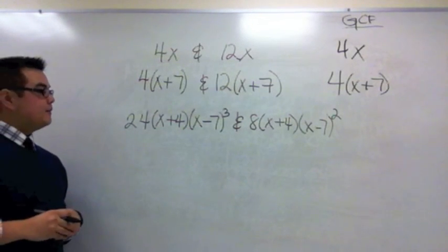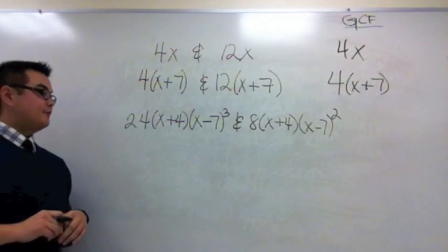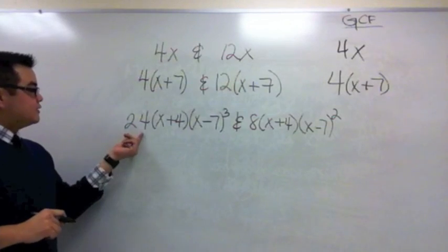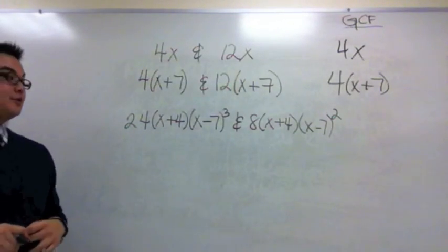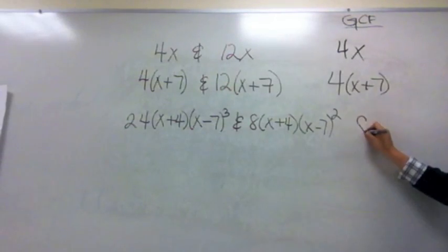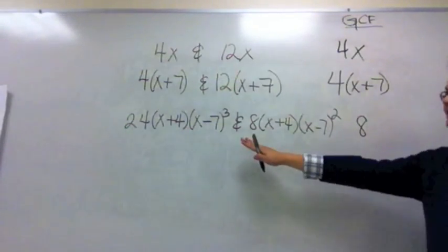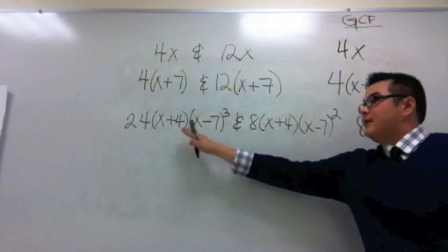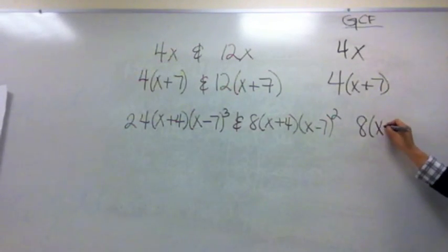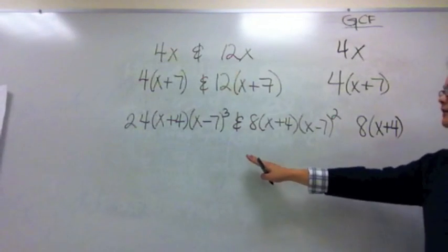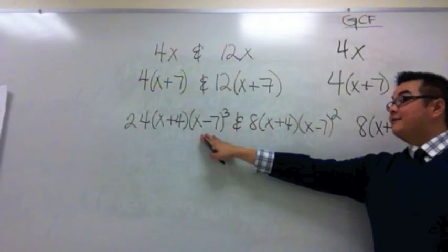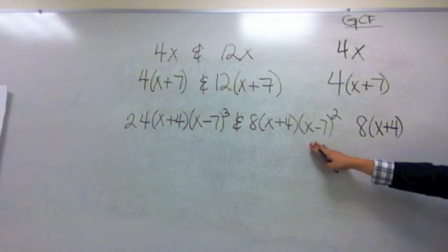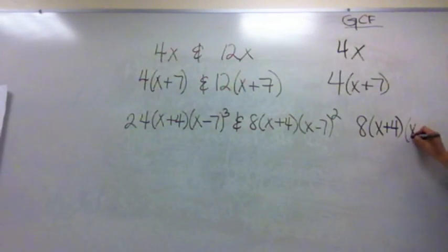Let's take a look at this example, a more complicated binomial multiplied with a monomial expression. 24 and 8, the GCF between 24 and 8 is 8. Then we take a look at the first binomial x plus 4 and x plus 4. They are in common with each other, so I write x plus 4 as part of my GCF. Now we take a look at the last binomial. I have x minus 7 cubed and x minus 7 squared. We're going to take that binomial, and remember we're going to take the lowest exponent so it's raised to the second power.